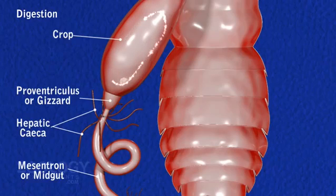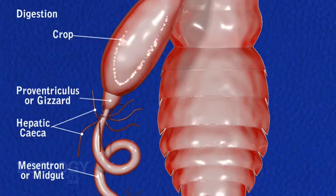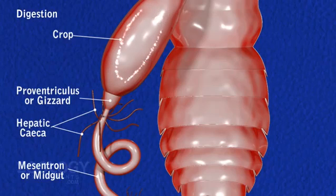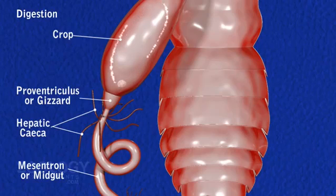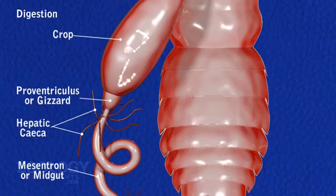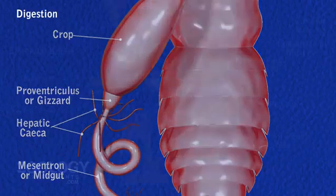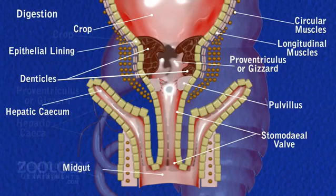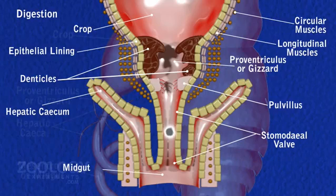Upon entering the proventriculus, food is subjected to further mastication by internal denticles, worked upon by longitudinal and annular muscles. Here, pulvilli act as a filter, allowing only finer particles to move ahead.